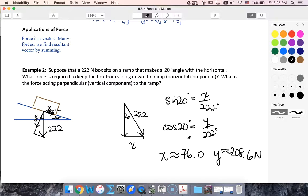So I would need to apply 76 Newtons of force going up the ramp. So my box is going to want to slide down the ramp. So I would need to apply 76 Newtons this direction to keep the box from sliding. The force acting perpendicular to the ramp this way is my y component of 208.6 Newtons.